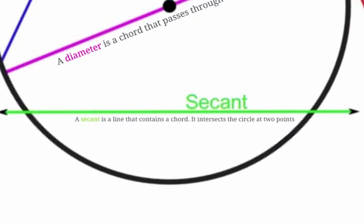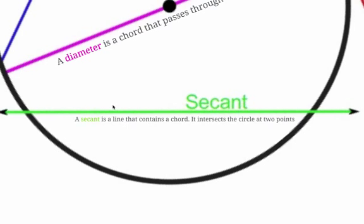A secant is a line that contains a chord and intersects the circle at two points. Whereas a chord ends at the circle, the secant goes on infinitely in both directions and intersects the circle at exactly two points. The interior part of a secant is a chord — we can think of every chord as just being the inside of a secant.